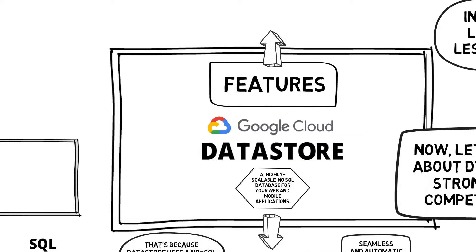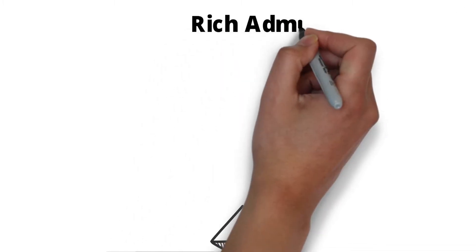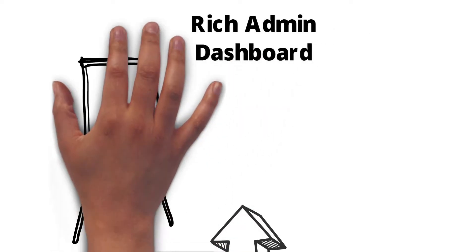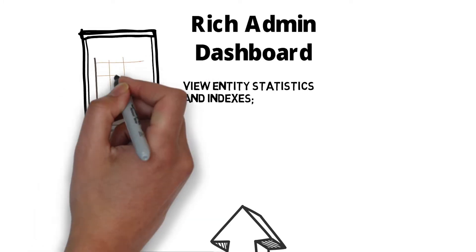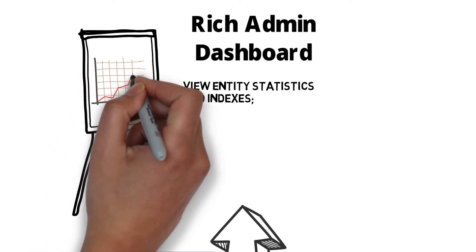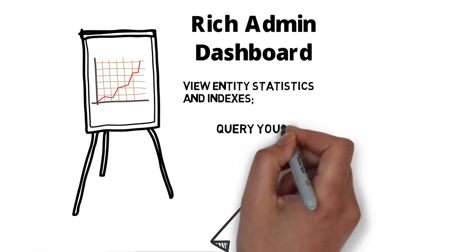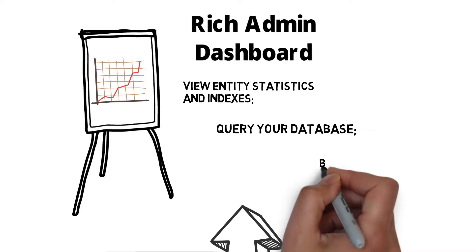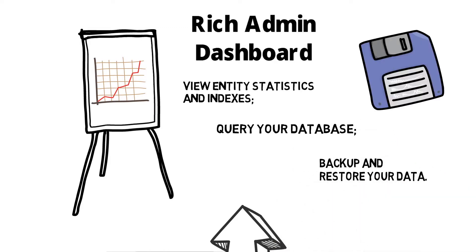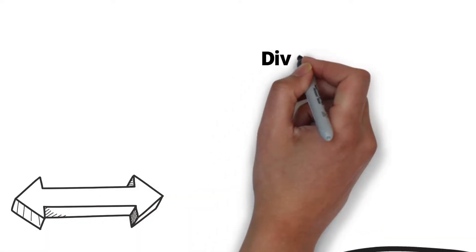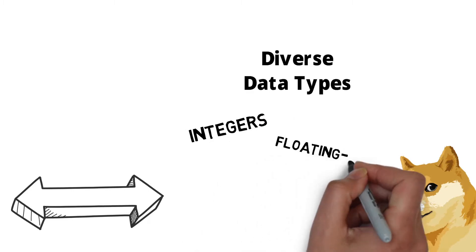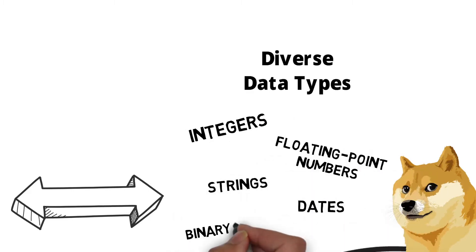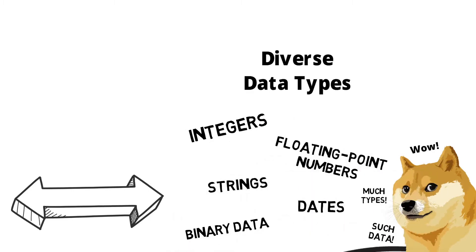Let's talk about the Rich Admin Dashboard. It's used to view database entity statistics and indexes, query your database, and backup and restore your data. There are also diverse data types — you can store integers, floating point numbers, strings, dates, binary data, and much more.